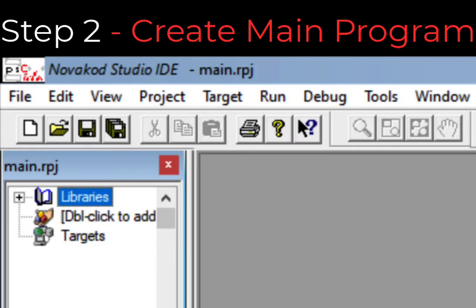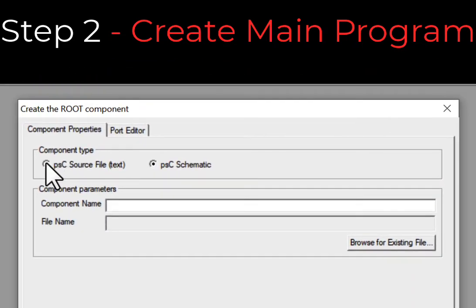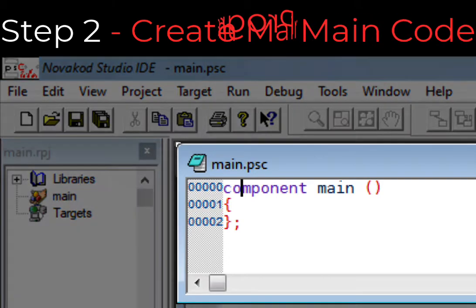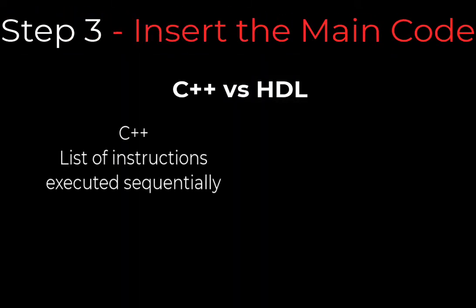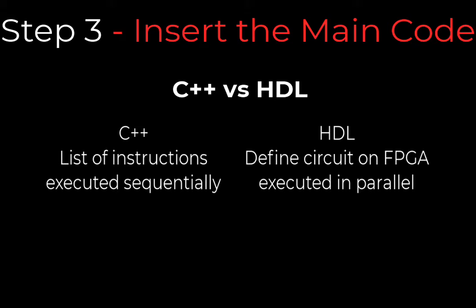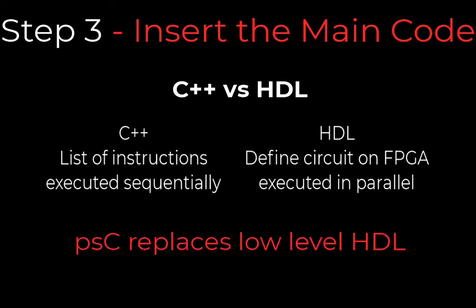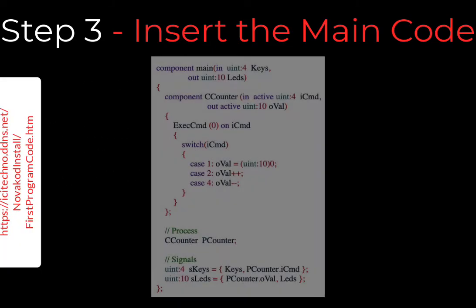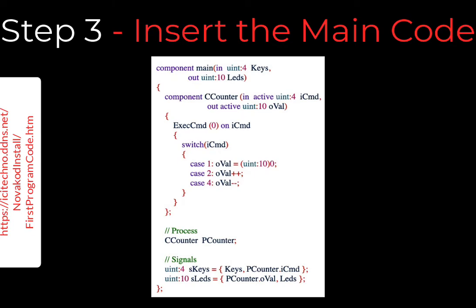Here is how to create an empty main program. In the main RPG window, double-click where indicated and select PSC source file. Insert a name for the main program, then select OK. The main component code will be displayed. To complete the main PSC code, copy and paste the following code into the main PSC window, then save the file. You can replace the existing code.